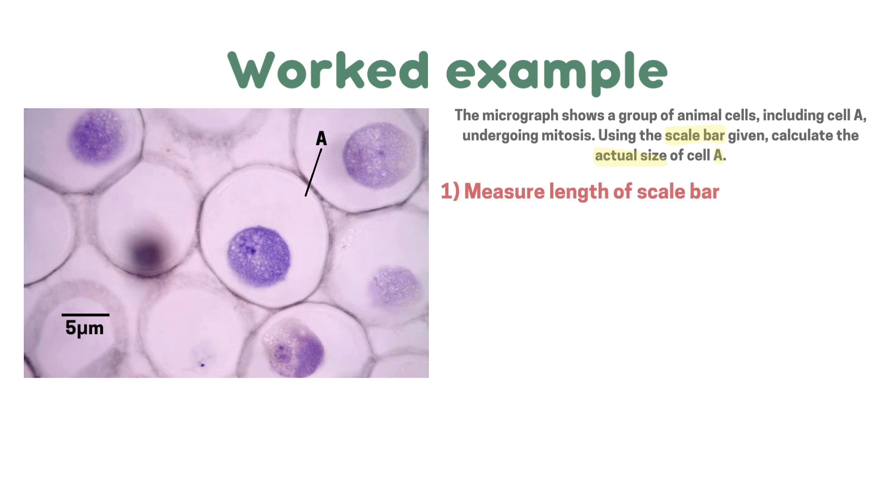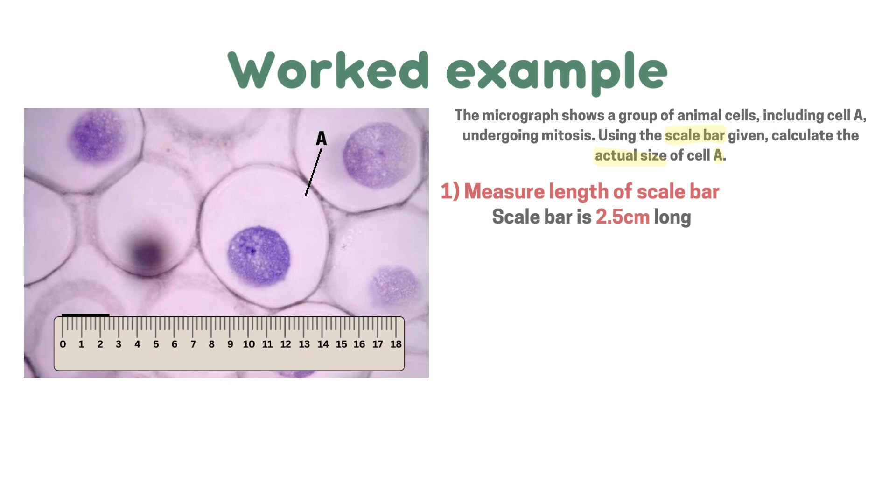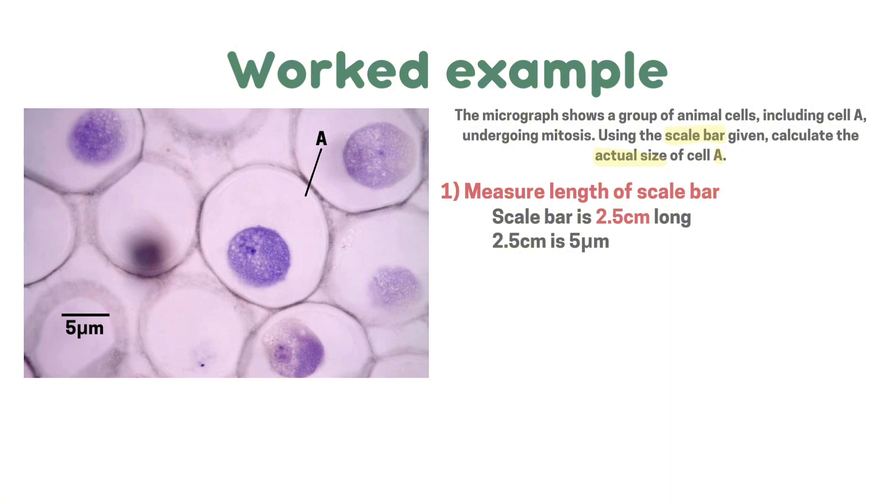First off, we're going to measure the length of the scale bar and we're going to need a ruler for this. According to the ruler, the scale bar is 2.5 centimetres long. And as it says on the scale bar, 2.5 centimetres is equal to 5 micrometres. So now we're going to measure the length of the cell.